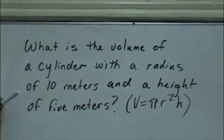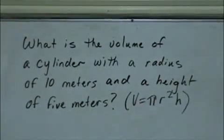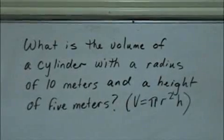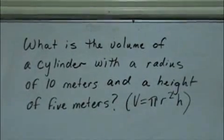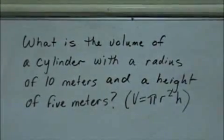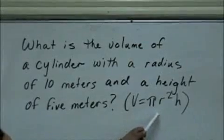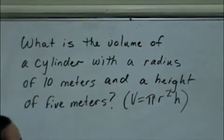Okay, for another example, we're going to be finding the volume of a cylinder. What is the volume of a cylinder with a radius of 10 meters and a height of 5 meters? The formula for our volume is pi times the radius squared times the height.